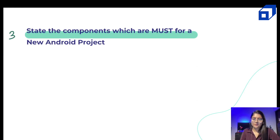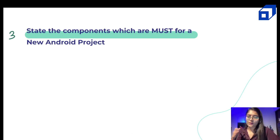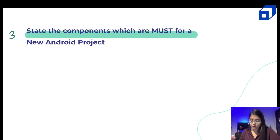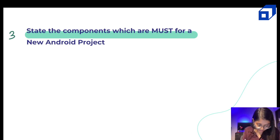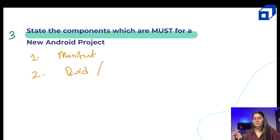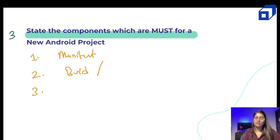The third question: state the components which are must for a new Android project. You would have created multiple Android projects, so let's go through each of these. Sometimes we know the concepts but are not able to communicate them properly. The very first one is the manifest file; secondly, we have the build directory — let's first check at the upper level what the important directories and files are.